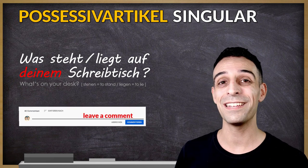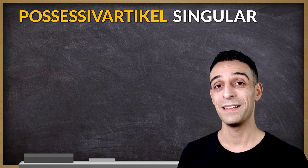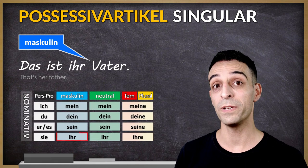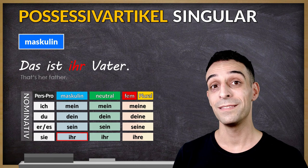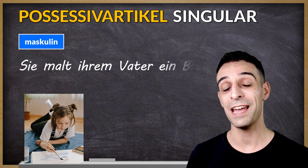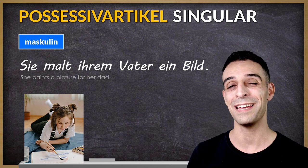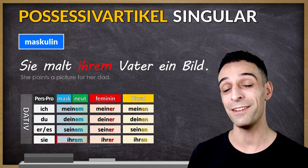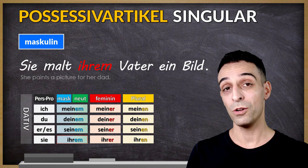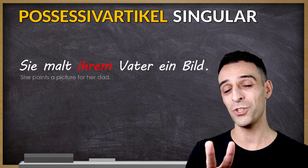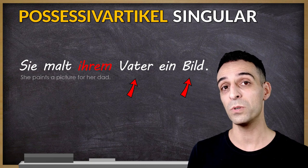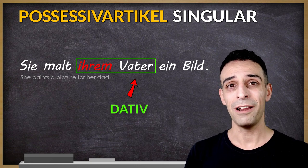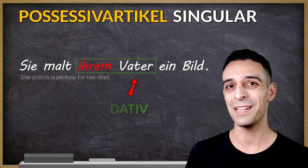Das ist ihr Vater. Vater is the subject, so we use nominative case: ihr. Sie malt ihrem Vater ein Bild. In this sentence, Vater is the indirect object, which means it's dative case: ihrem. If you have two objects in one sentence and one of them is a person, in most cases this person will be in dative case. There are exceptions, but most likely it will be.